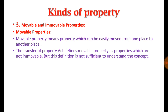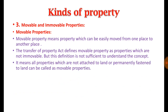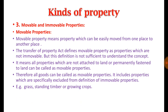According to this definition, all properties which are not attached to land and not permanently fixed to land can be called movable properties. All goods can be called movable properties, and it includes all those properties specifically excluded from the definition of immovable property under the Transfer of Property Act or the General Clauses Act 1897. Standing timbers and growing crops are also included in the definition of movable property.